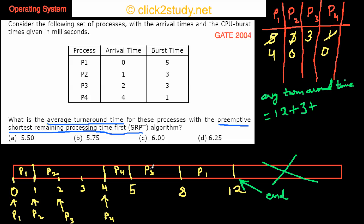Then we talk about P3. P3 arrives at 2 and it finishes at 8, that means the turnaround time is 8 minus 2, that is 6. And then we talk about P4. P4 arrives at 4, finished at 5, the turnaround time is 5 minus 4, that is 1. We take the average of all these. So what do you get? You get 22 by 4, and 22 by 4 is 5.5, which means that your option is the correct choice.